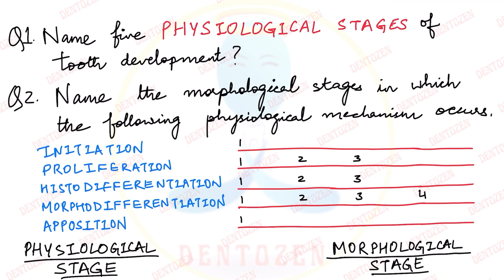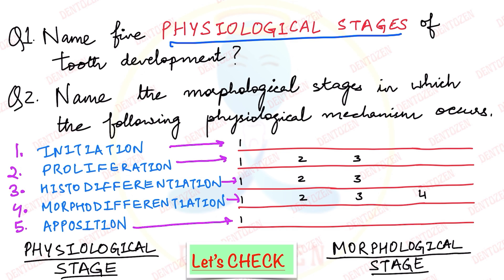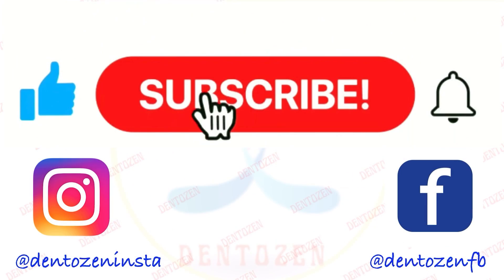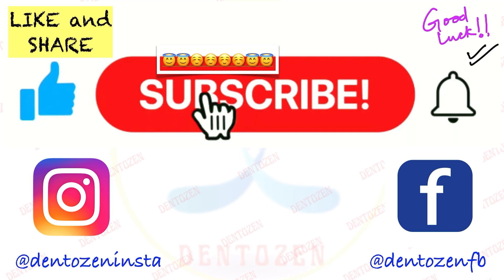Let's quickly check what you have learned. Name the five physiological stages of tooth development. Name the morphological stages in which initiation, proliferation, histodifferentiation, morphodifferentiation, and apposition occur. If you liked the video, tap the like button, share it with your friends, and hit the bell icon to stay notified about new videos. Keep reading, keep studying. Good luck for your exams. See you in the next video. Take care, bye-bye.